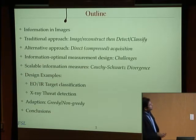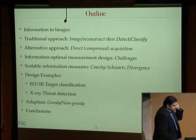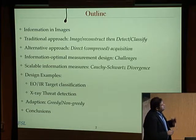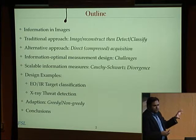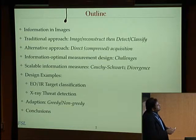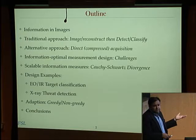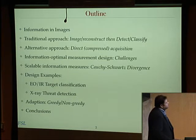Here's the outline. I'll start with defining what I mean by information in images — and you can replace that word with video or any signal in general. Then I'll talk about the traditional approach to imaging, where you typically form a high-quality isomorphic measurement of the object, and for detection and classification tasks, you do further processing on that image to make a decision. What I will basically argue is that there are alternative approaches where we don't necessarily have to make an image measurement. We can directly go to the classification or detection task without ever forming an image, with distinct benefits in improved performance or improved system size, weight, and power reductions.